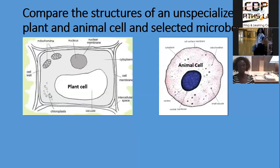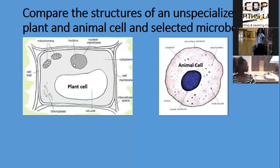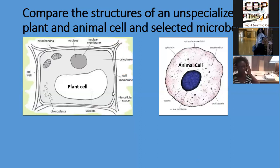Now, we have the chloroplast, and in the chloroplast is where photosynthesis takes place. And we have the large vacuole, the cell membrane, and the fluid here is like plasma. What I want you guys to do is to compare these two and tell me the differences between the two of them. This is the plant cell and this is the animal cell.